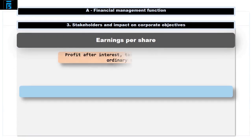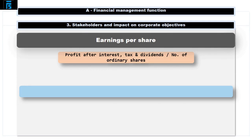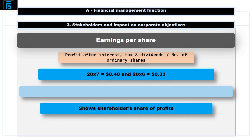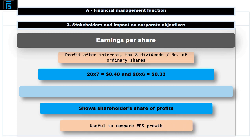Earnings per share is calculated by dividing the profit after tax and preference dividends by the number of ordinary shares in the company. The result is the amount of profit per share. For Top Dog, this increased to $0.40 a share in 20x7 from $0.33 in 20x6. This increase is good and reflects the increase in profits. However, it does not reflect the actual earnings received by the shareholders — it just shows the shareholders' share of the profits after tax. Earnings per share is not a useful comparison tool between companies; however, the growth in earnings per share is something that can be compared.